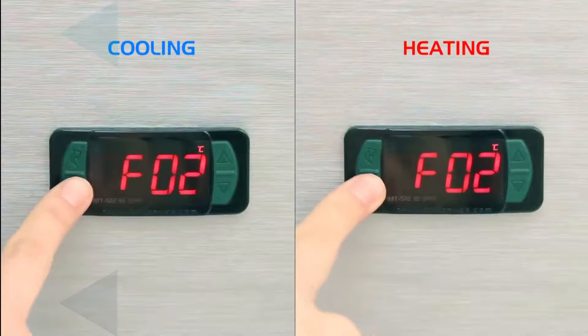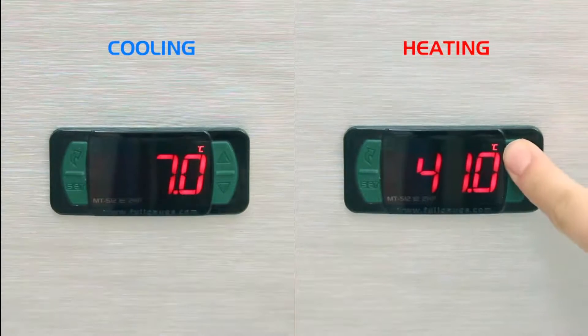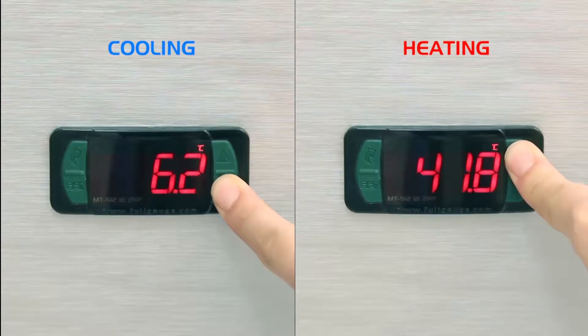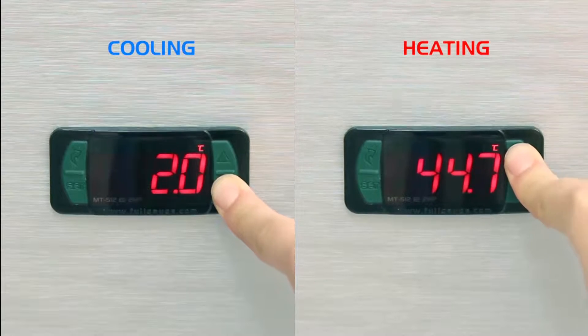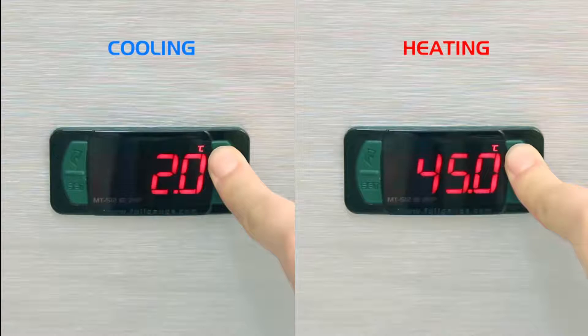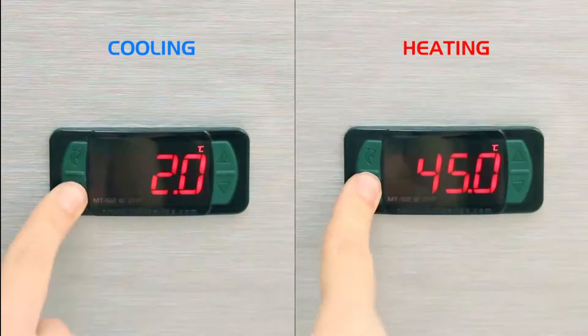F02 Set point. Set point is the temperature we want to keep. It's also the point where the load control relay is turned off. In the examples, we adopted a set point of 2 degrees Celsius in cooling and 45 degrees Celsius in heating.